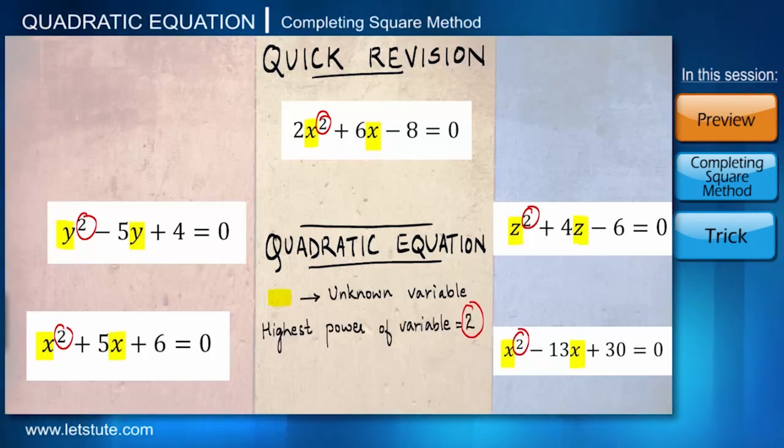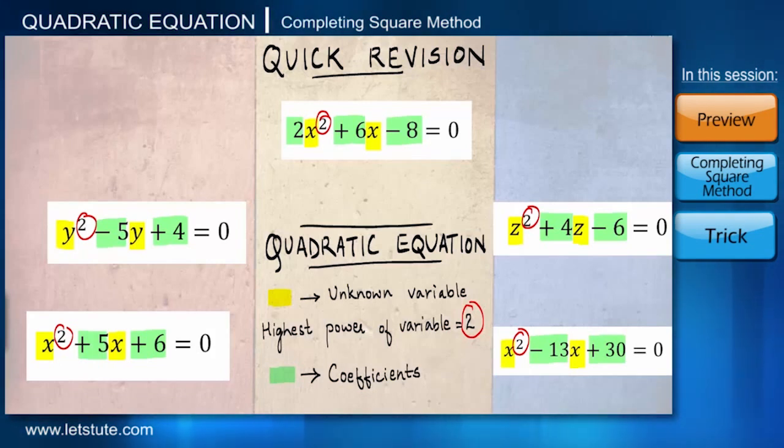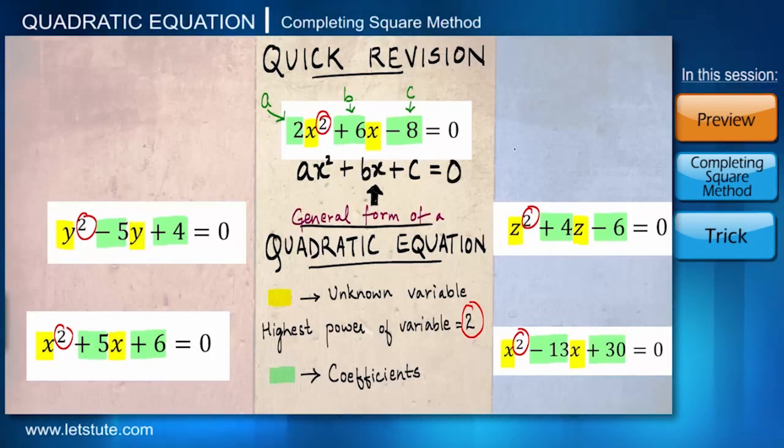Also, these variables may or may not be accompanied by numbers before them, which are called coefficients. We can denote these coefficients by letters a, b, and c. So generally, a quadratic equation can be represented as ax² + bx + c = 0.